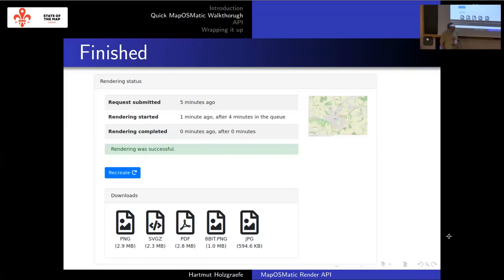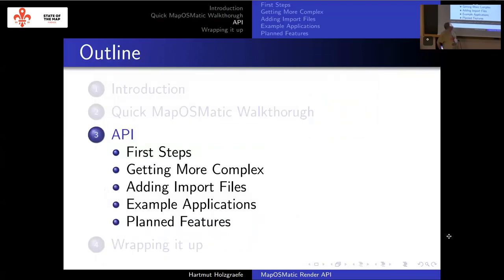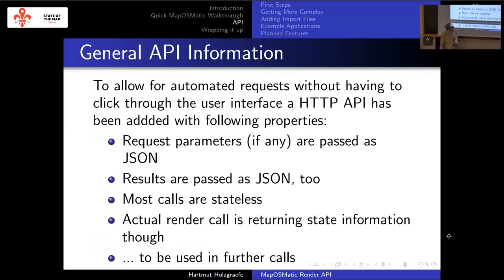This is the original manual MaposMatic step, but it is now also possible to get the same via an API. It's basically a simple HTTP API that accepts requests passed as JSON and returns JSON. Most of the API is stateless — just the actual render request gives you back a render job ID that you can then refer to in following requests. The idea was to get all these manual steps out and integrate the actual rendering queue into other software of your own.